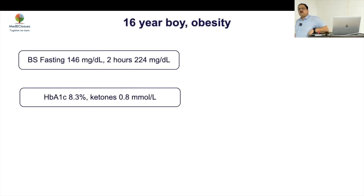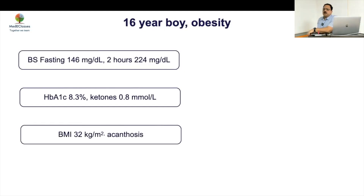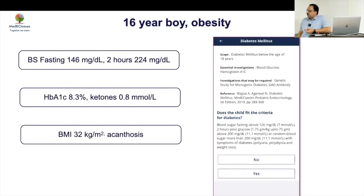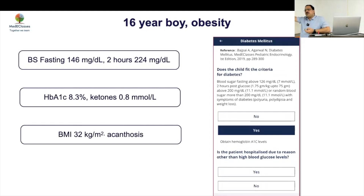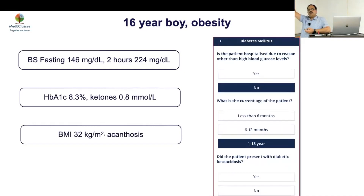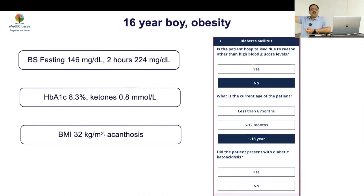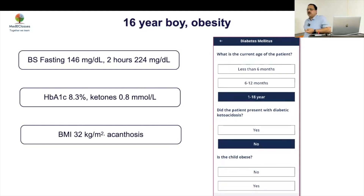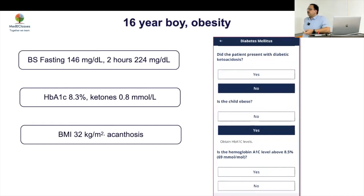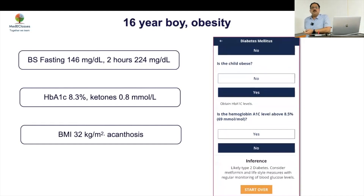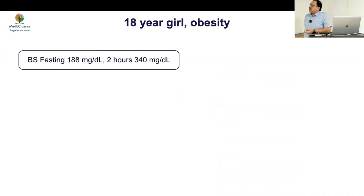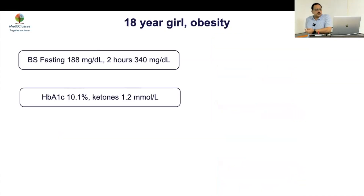Third case: 16-year-old boy with obesity, hyperglycemia, HbA1c 8.3%, ketones 0.8, BMI 32, acanthosis present. This is obesity without DKA — more than one year, obese, no DKA — most likely type 2 diabetes. Because the HbA1c is not very high, you can start on metformin alone in this setting.